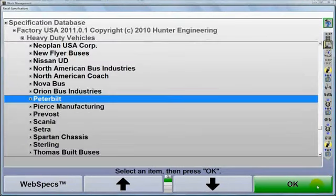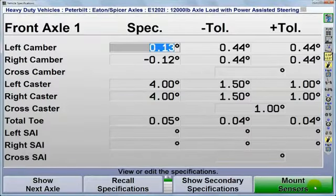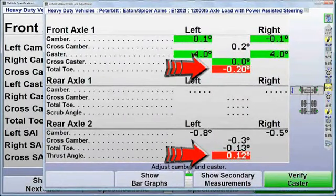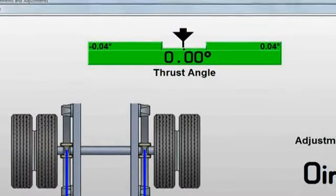Then recall specifications. Having specs for comparison allows the aligner to highlight which adjustments are needed and provide a live adjustment display to make the corrections easy.